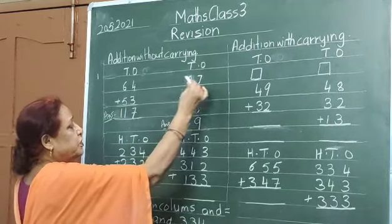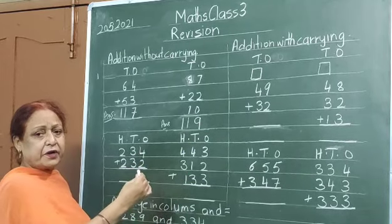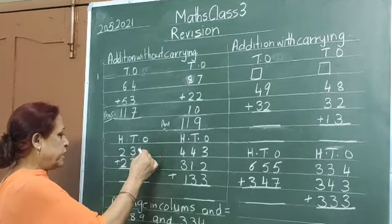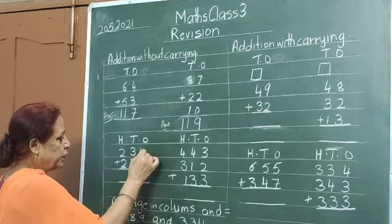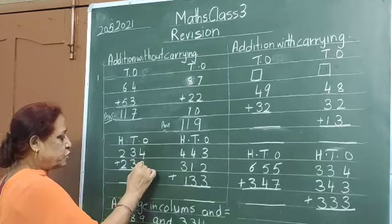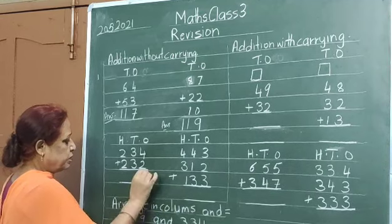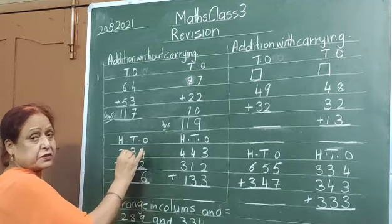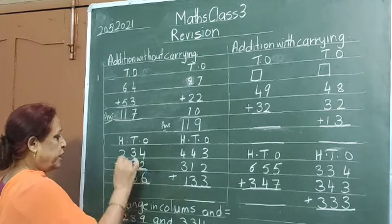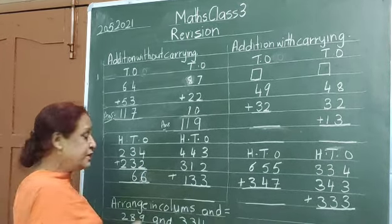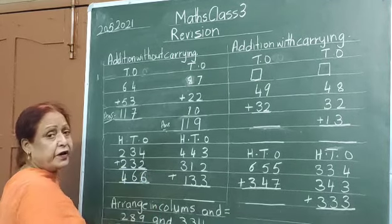Now this sum goes in 3 steps. Now in 3-digit number — addition in 3-digit number. 1s side, 10s side and 100s. Okay, 4 plus 2 is 6. And 3 plus 3 is 6. And 2 plus 2 is 4. Answer is 466.